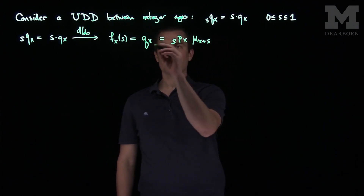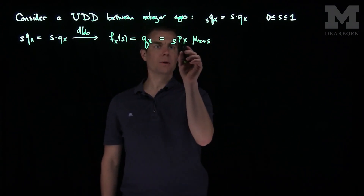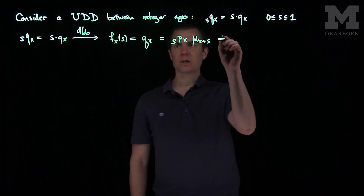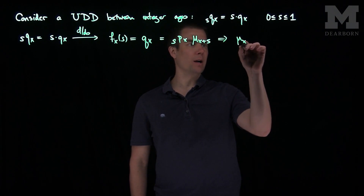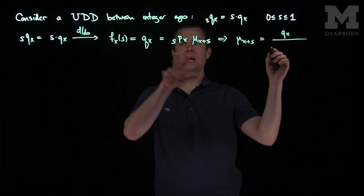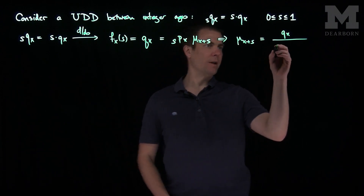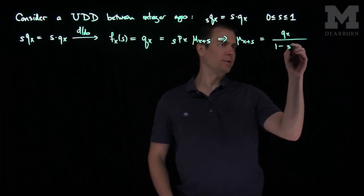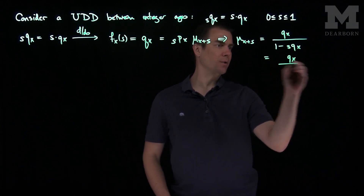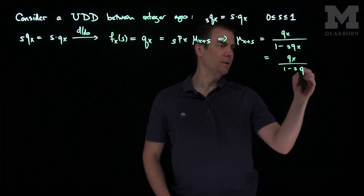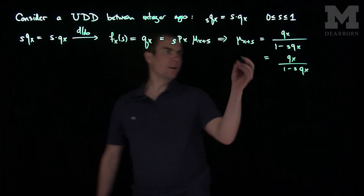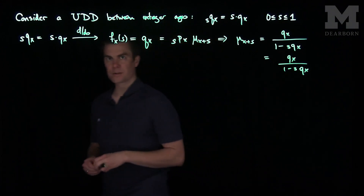This gives us several different things. The first thing it tells us is that q_x equals p_x(s) times mu_{x+s}, which means mu_{x+s} equals q_x over p_x(s), written as q_x over (1 minus s times q_x). This gives us a formula for the force of mortality under the uniform distribution assumption.